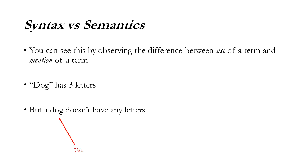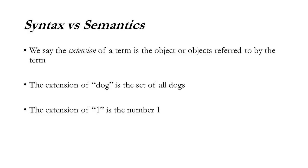The use of the term is seen in one expression; the mention is here with the actual shape. This use-and-mention distinction can be illustrated just by this. We say that the extension of a term is the thing — the object or objects referred to by the term. The extension of 'dog' is the set of all dogs, or if you're pointing to a single dog, it would be that dog. Just like the extension of the numeral 'one' is the number — that's the thing it refers to.